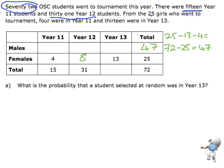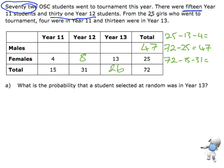Now I can look at the Year 13s, because that row is just missing one value. 72 minus 15 minus 31 gives 26. Then the Year 11 column has to add up to 15, so with 4 females, there must be 11 males. Year 12: 31 minus 8 means 23 Year 12 males. And Year 13: 13 plus 13 equals 26. So there's my table filled in.